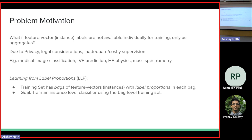So this is learning from label proportions, where the training set has what you call bags of feature vectors — subsets of feature vectors or instances with label proportions for each bag. The goal is to train an instance-level classifier. You still want to predict at the instance level; you don't want to predict at some aggregate level. You want to train an instance-level classifier using this bag-level training. One question is whether the bag distribution is consistent with your test distribution. In general, there could be some distribution shifts.